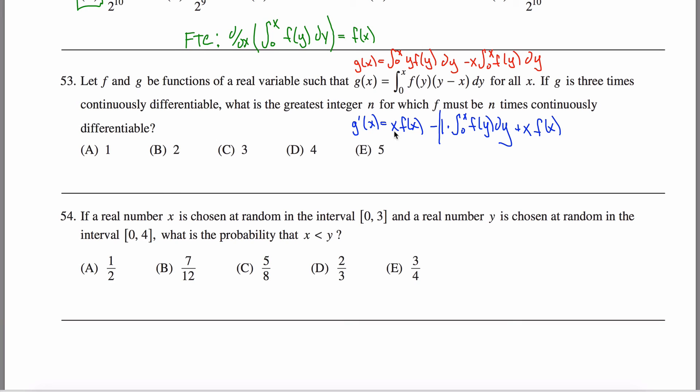But wait a minute, now I've got an x, f of x here, minus an x, f of x over here. So I can cancel those two guys out, and I can say that g prime of x is just equal to, let's see, this is gone, this is gone, I have negative the integral from zero to x of f of y, dy. So the first derivative is equal to this thing right here.